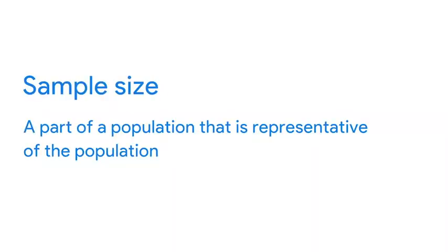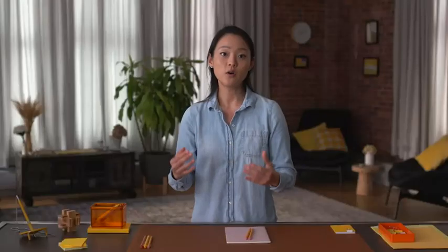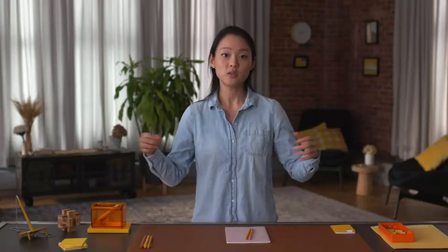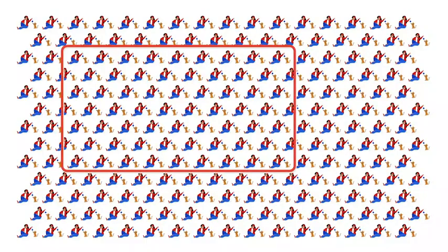When you use sample size, or sample, you use a part of a population that's representative of the population. The goal is to get enough information from a small group within a population to make predictions or conclusions about the whole population. The sample size helps ensure the degree to which you can be confident that your conclusions accurately represent the population. So for the data on cat owners, a sample size might contain data about hundreds or thousands of people, rather than millions.